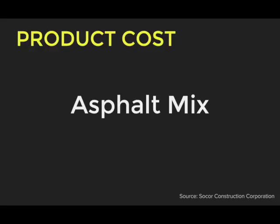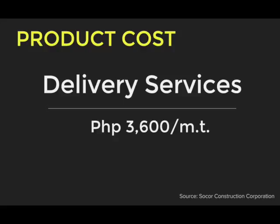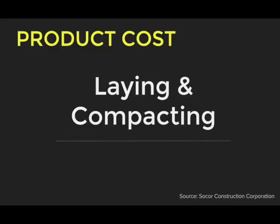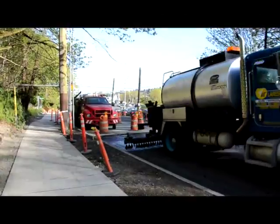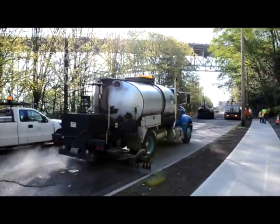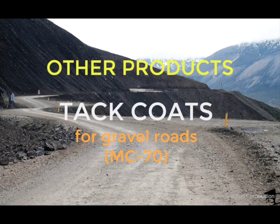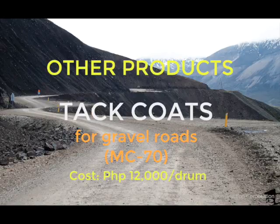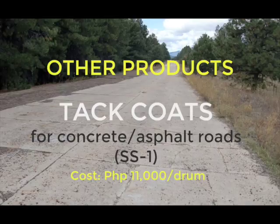The approximate cost of the asphalt mix per metric ton is P3,300. Delivery services within Metro Manila cost around P3,600 per metric ton, and outside Metro Manila an additional P5 per kilometer per metric ton applies. Laying and compacting costs P950 per metric ton. Socor Construction Corporation also provides tack coating: MC-17 for gravel road surfaces costs around P12,000 per drum, and SS-1 for asphalt or concrete surfaces costs around P11,000 per drum, with each drum containing 200 liters.